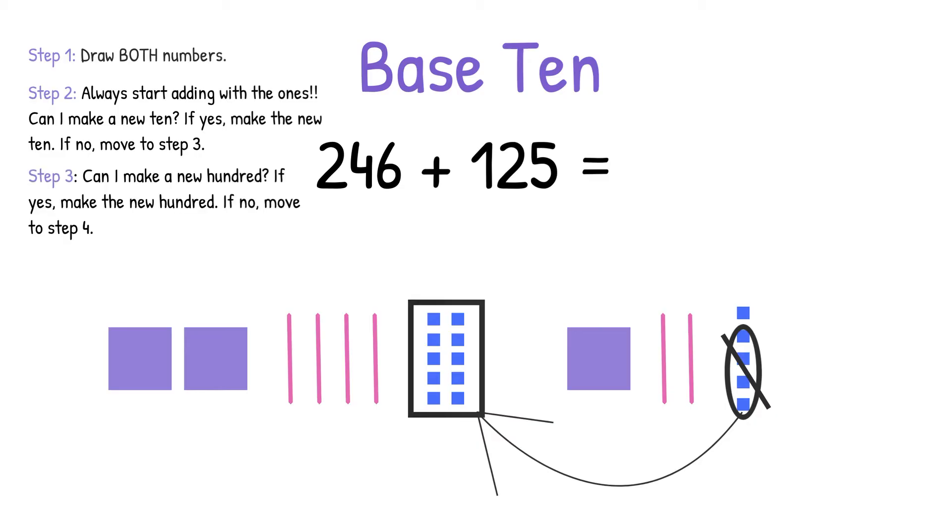Step 3 is, can I make a new 100? If yes, you make your new 100 now. If no, you move on to Step 4. In this problem, we do not have 10 tens to make a new 100, so we're just going to move on to Step 4.